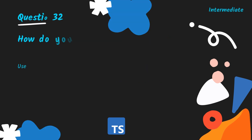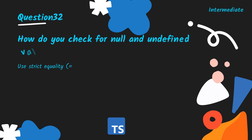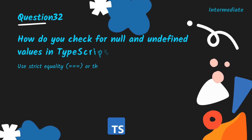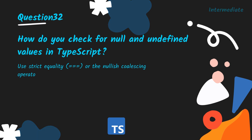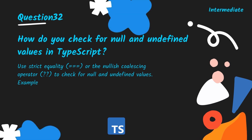How do you check for null and undefined values in TypeScript? Use strict equality, typeof checks, or the nullish coalescing operator to check for null and undefined values. Example: if (value === null) { }.